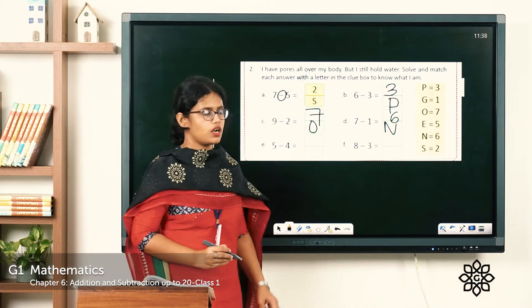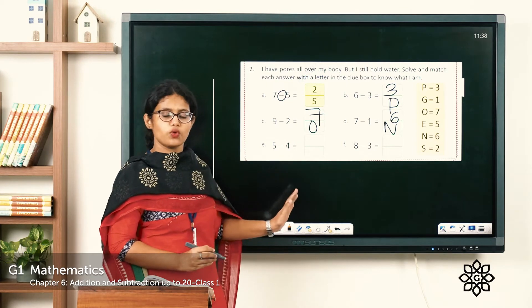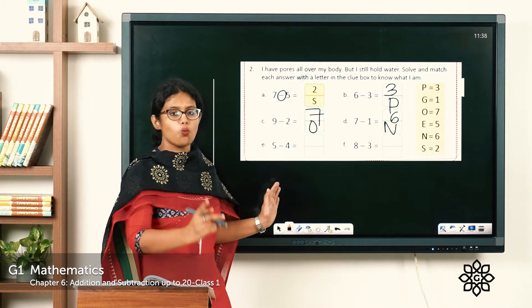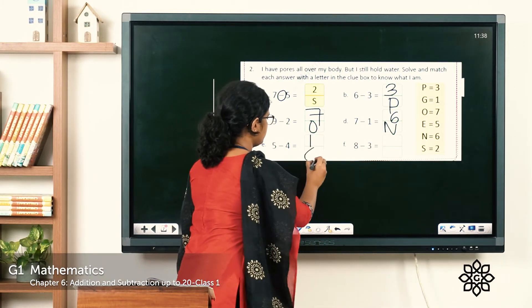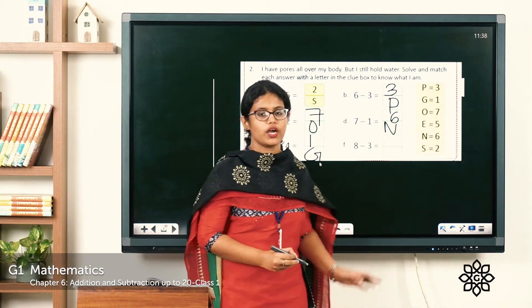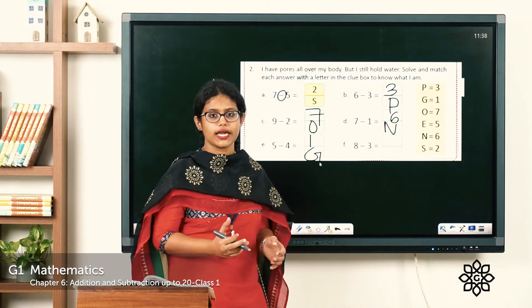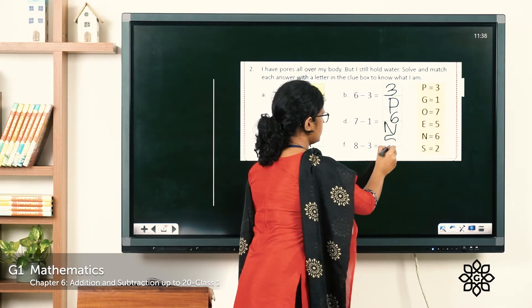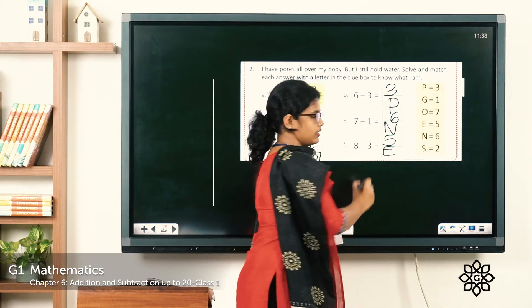Next, 5 minus 4 — draw 5 sticks and cut 4. The answer is 1, and the letter for 1 is G. Then 8 minus 3 — take away 3 from 8 — the answer is 5, and the letter for 5 is E. Write E here. So we have solved all the sums.